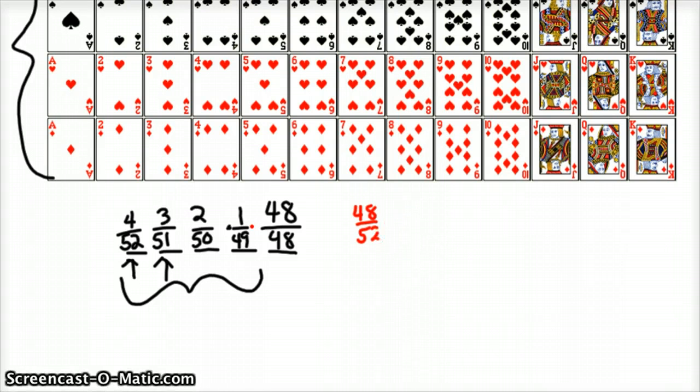Next card would be, there's still four aces left in the deck. So times four out of 51 cards because we chose one non-ace. Then three out of 50, then two out of 49, and then one out of 48.